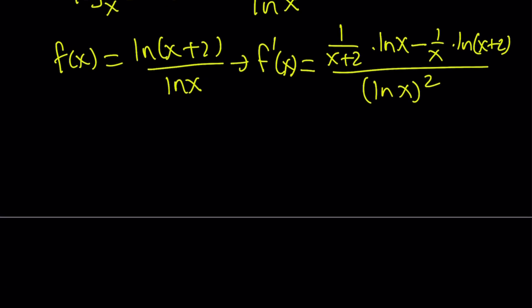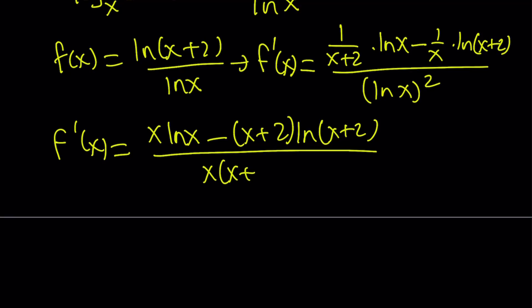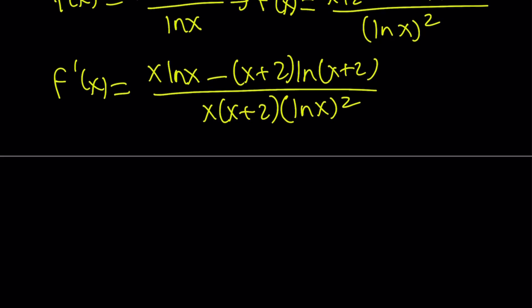I'm going to differentiate ln x plus 2, which is 1 over x plus 2, multiply by ln x minus the derivative of ln x, which is 1 over x, multiplied by ln of x plus 2. And this will be divided by ln x quantity squared. Let's go ahead and make a common denominator and rearrange these terms. We can write f prime as x ln x minus x plus 2 times ln x plus 2 all over x times x plus 2 and ln x quantity squared.